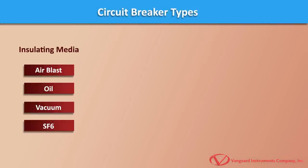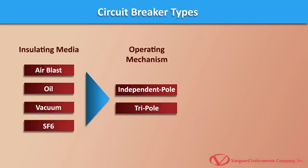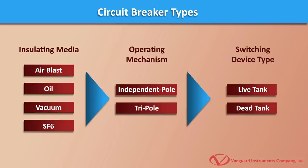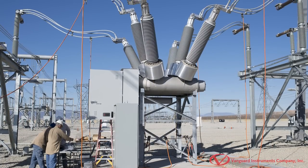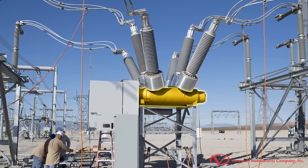Substation breakers are classified as either independent pole or tripole. They are further classified as live tank or dead tank breakers. Independent pole breakers feature a separate operating mechanism for each phase while tripole breakers use a common operating mechanism for all three phases.